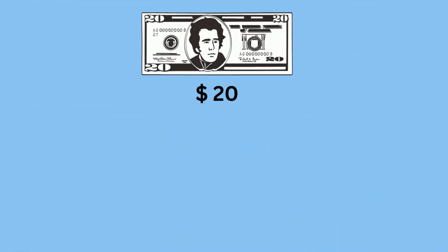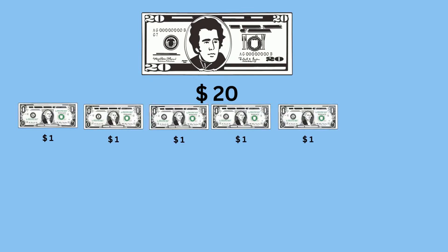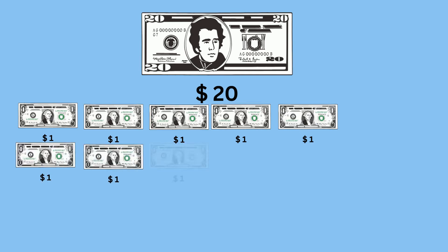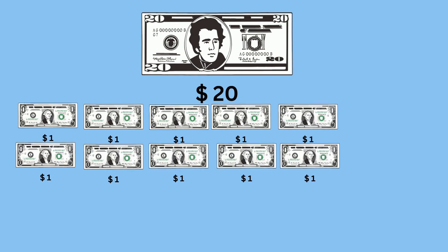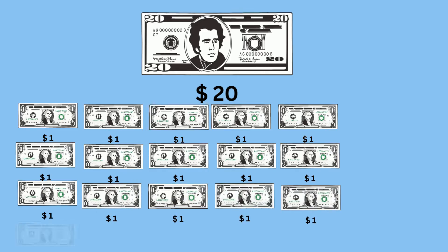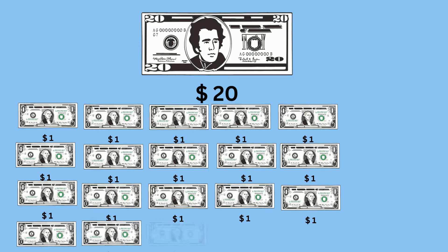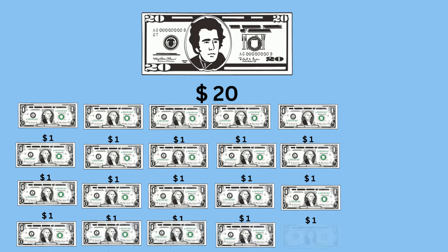Let's take a look at the twenty dollar bill. It's made up of twenty one-dollar bills. So we have 1, 2, 3, 4, 5, 6, 7, 8, 9, 10, 11, 12, 13, 14, 15, 16, 17, 18, 19, 20. Twenty one-dollar bills make up a twenty.